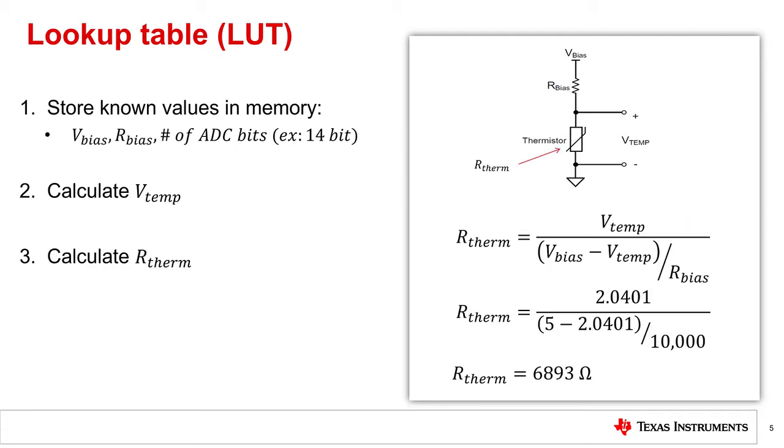Now that we have the voltage drop across the thermistor, we can use a simple equation derived from the well-known voltage divider formula to calculate the effective resistance value of the thermistor. Continuing with Vtemp from the previous example, we find that the resistance of the thermistor is 6.893 kiloohms.